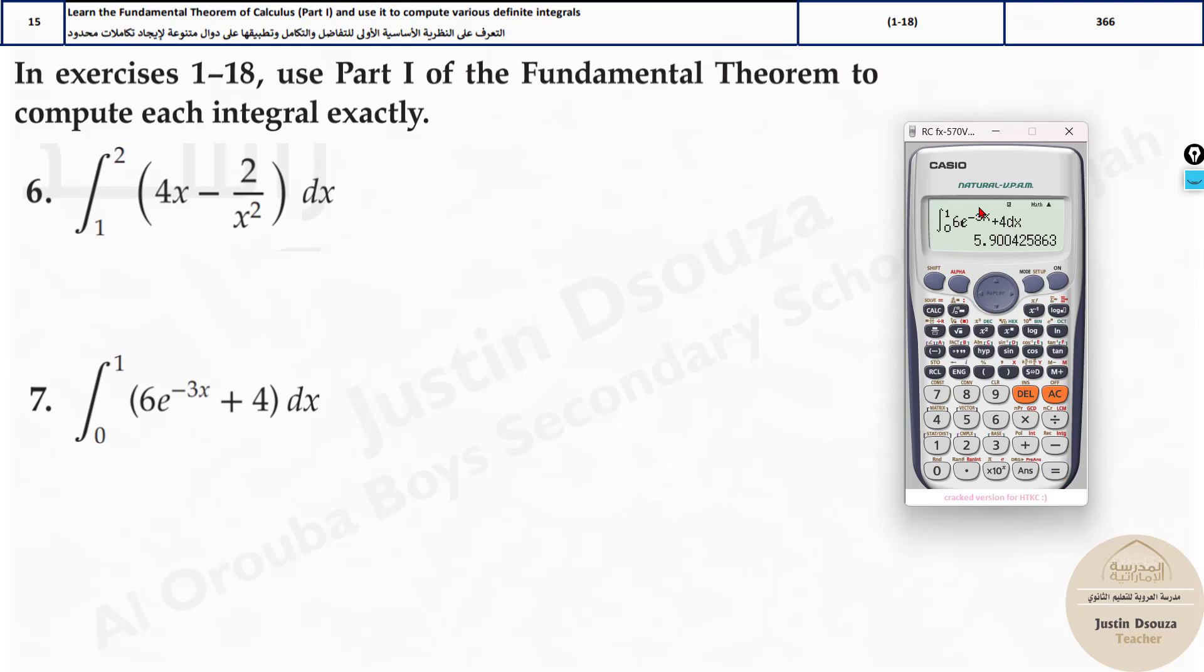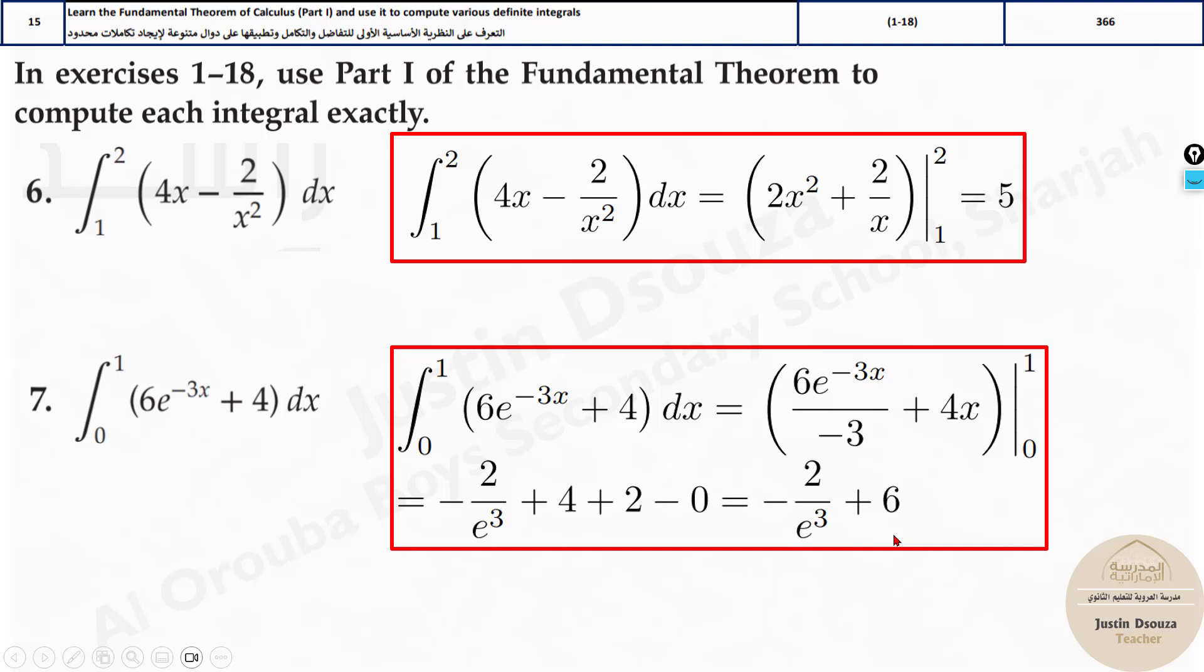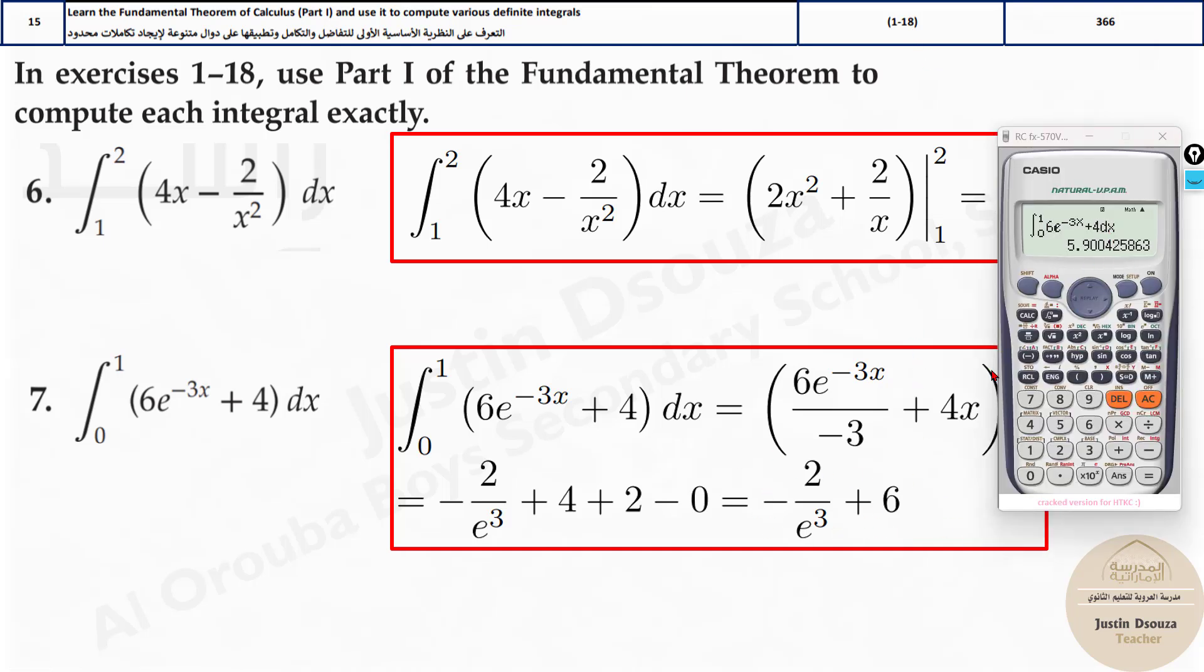The thing is you get 5.9004 but the option may not be the same. Option may not be decimals. Look over here the answer is not at all in decimal. So how would you check which is your correct answer? So what you need to do is write this answer down somewhere.